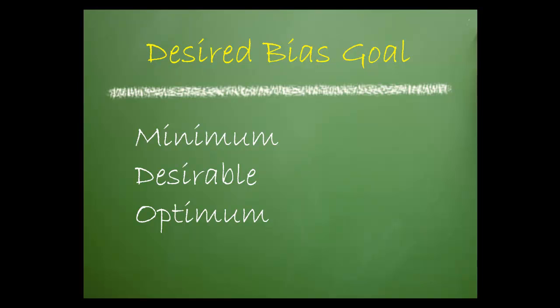The minimum goal is intended for labs that lack the resources to achieve desired performance. Desirable is the most widely accepted and frequently used goal. Finally, optimum is intended for those tests where the desired goal is easily obtained.